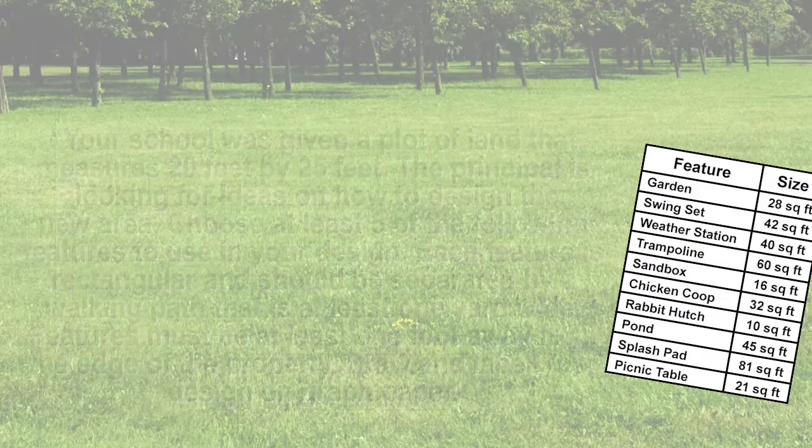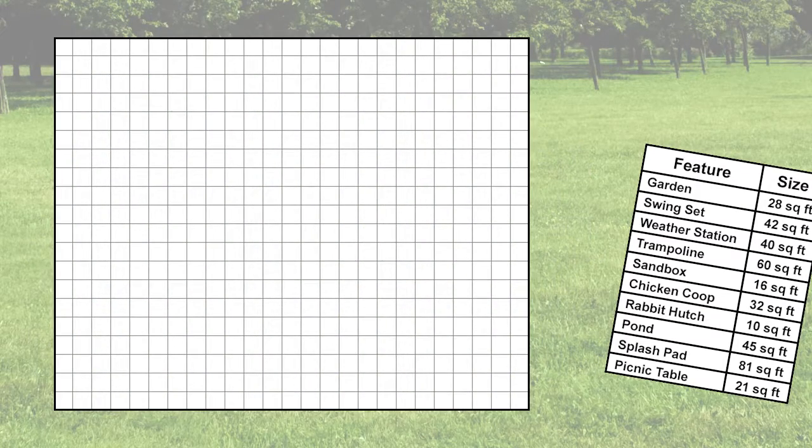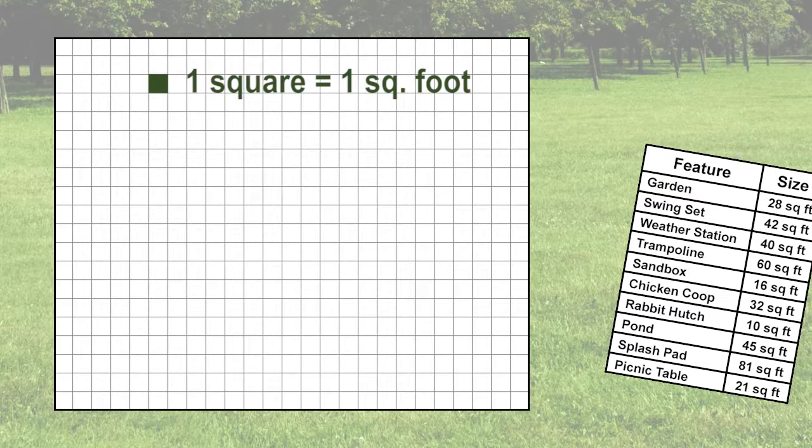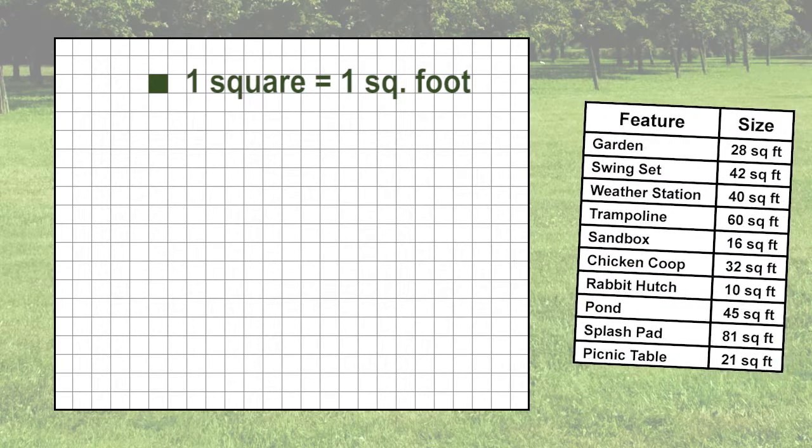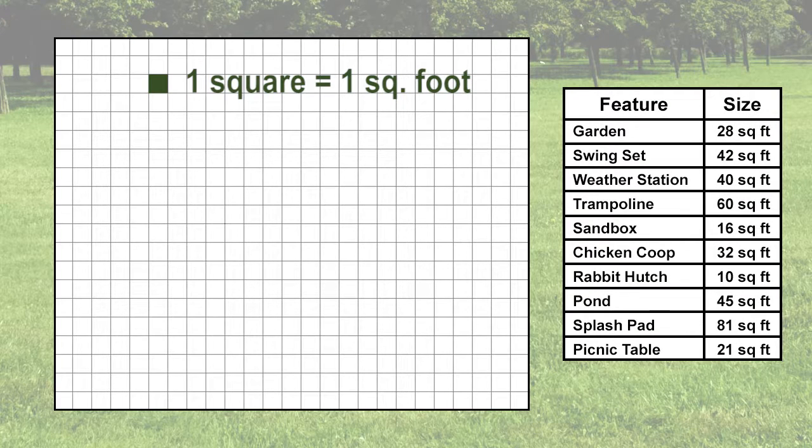The first thing we will need to do is determine what scale we will be using on our graph paper. Let's use one square equals one square foot. Let's choose five things from the list to include in our play area: the garden, swing set, weather station, splash pad, and picnic table.